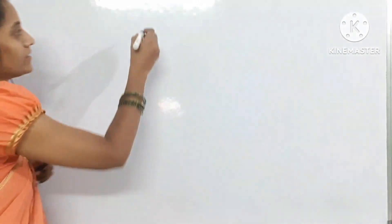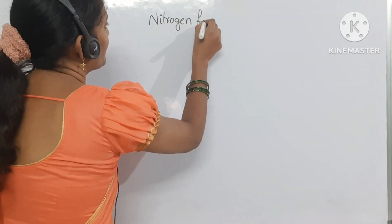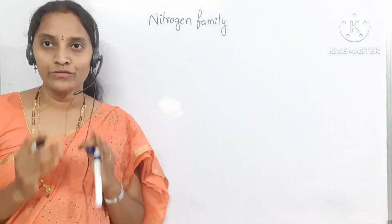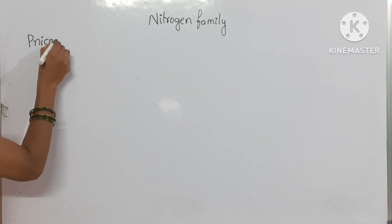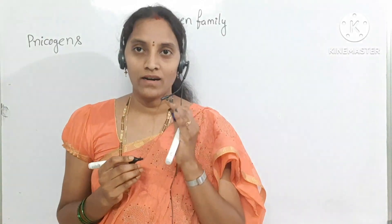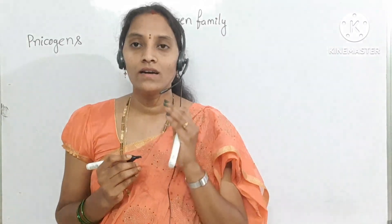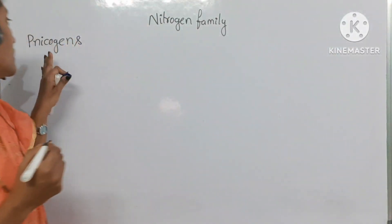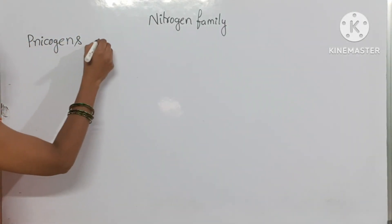5A group elements or 15th group elements are also known as the nitrogen family. Another name for these elements is pnictogens. We call them pnictogens because they can produce suffocating nitrogen gas in the absence of oxygen. Pnicto means suffocating, gens means production — suffocating gas production in absence of oxygen. Their compounds are known as pnictides.